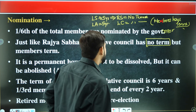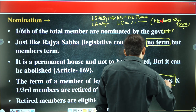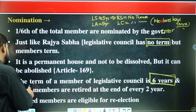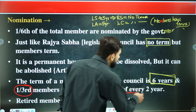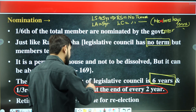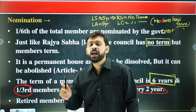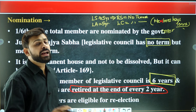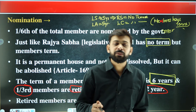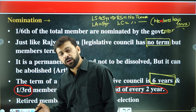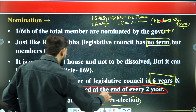The tenure of a member of the legislative council is six years. One-third of members retire at the end of every two years. Retired members are also eligible for re-election.